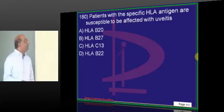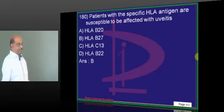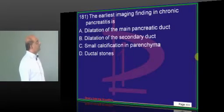Which form of uveitis? HLA-B27, ankylosing spondylitis, seronegative spondyloarthropathies.